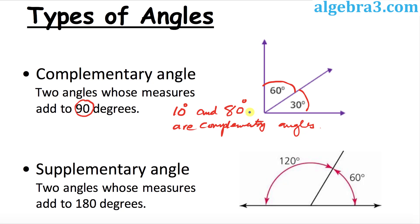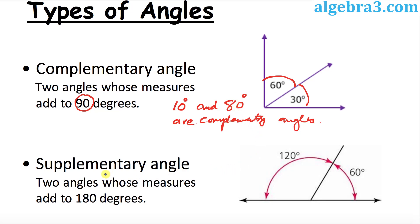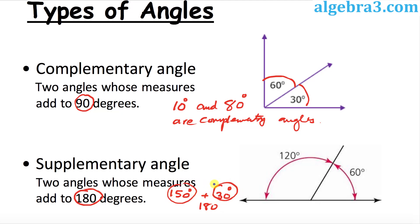There can be many more examples, as long as the two angles add up to 90 degrees. Supplementary angles are two angles that add up to 180 degrees. For example, 60 degrees and 120 degrees add up to 180, so they are supplementary. Another example: 150 degrees and 30 degrees also add up to 180, making them supplementary angles.